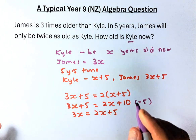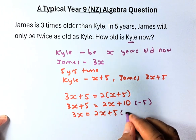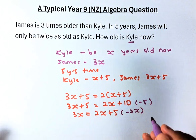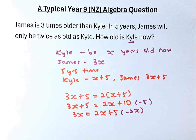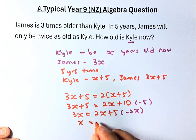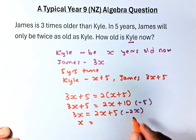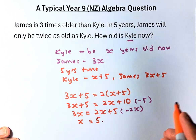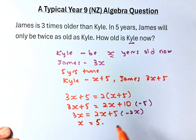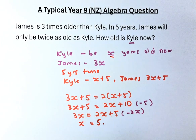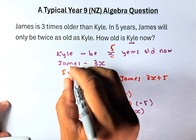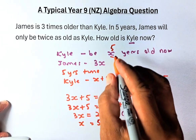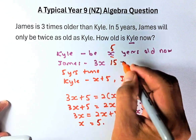Last but not least, we are going to minus 2X on both sides of the equation. When you minus 2X, 3X minus 2X leaves us X, and 2X minus 2X cancels out, leaving 5. So Carl was X years old, meaning he is now 5 years old. And James, which is 3X — 3 times older — will be 15 years old.